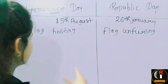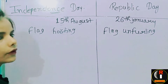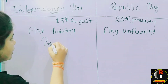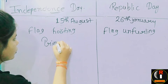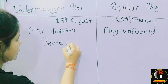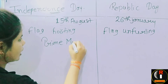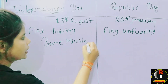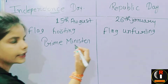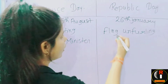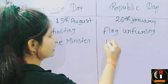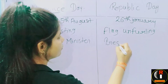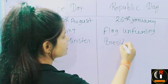On 15th of August, the flag is unfurled by the Prime Minister of India. On 26th of January, the flag unfurling is done by the President of India — the President of Bharat.